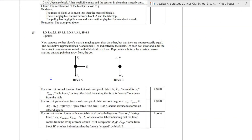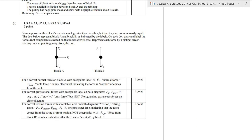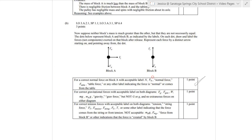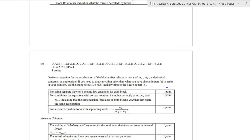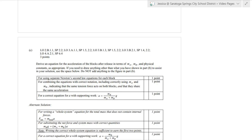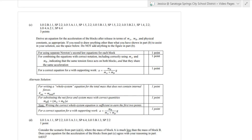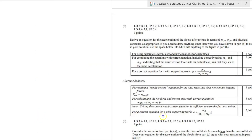Let's check the scoring for the free body diagram and the equation. I get one point for a normal force or table force — I have that. I get points for correct gravitational forces — I have both. And correct tension forces — I have those. For part C I used separate second law equations, combined them, and got the correct answer. So I got all of those points.